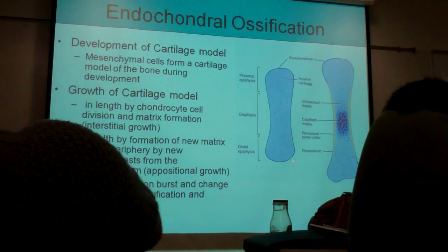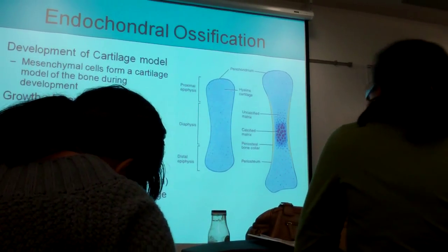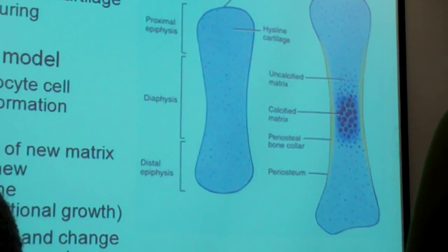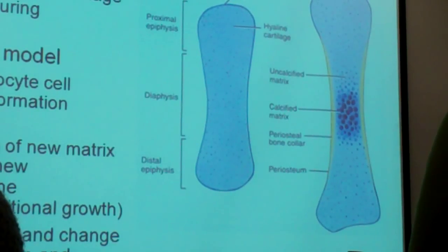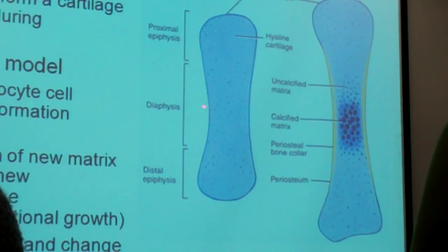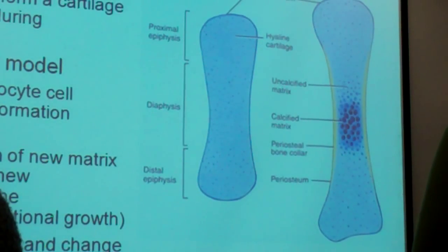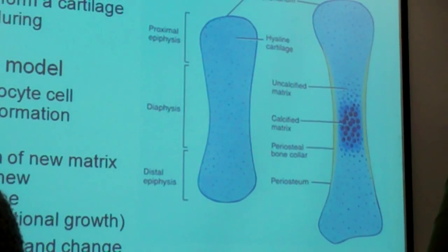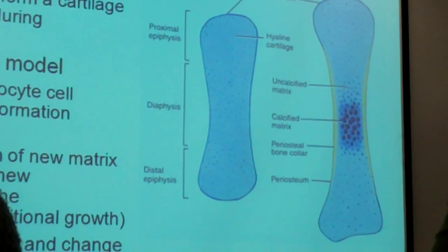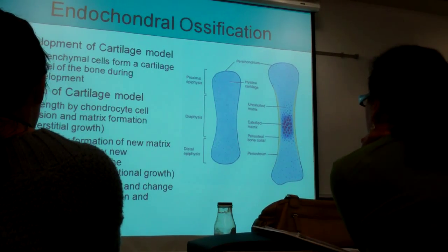Here is our cartilage, shaped like a longbow. We'll call this the future proximal epiphysis, this is the future distal epiphysis, and this is the future diaphysis. Right now it's all hyaline cartilage, and hyaline cartilage is surrounded by a perichondrium. So first, the mesenchymal cells of connective tissue form cartilage — that's the first thing that happens.